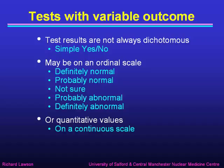Here we have results which are not just dichotomous yes-no answers, but can be a range of answers. For example, they might be on an ordinal scale where we define a test result as either definitely normal, probably normal, not sure, probably abnormal, or definitely abnormal. That's a range of values without numbers but arranged in an ordinal scale. Or we might have quantitative values — numbers on a continuous scale. This is obviously more complicated than the simple yes-no answer we've looked at so far.